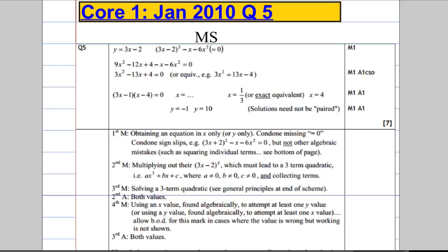So a quick look at the mark scheme. If you want to have a read through it, you can do. Just pause the video, have a look. You can see there the correct answers. So when x is 4, and we've got 4 and 1 third, and negative 1 and 10. So we're actually absolutely sorted out there.